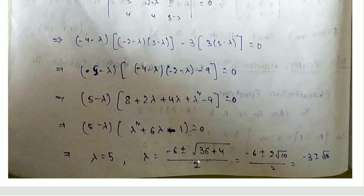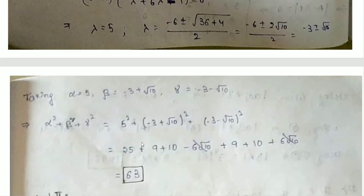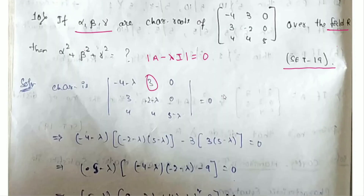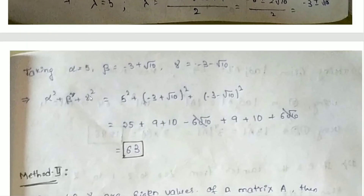The eigenvalues are: λ₁ = 5, λ₂ = −3 + √10, λ₃ = −3 − √10. So α = 5, β = −3 + √10, γ = −3 − √10. We compute α² + β² + γ² = 25 + (−3+√10)² + (−3−√10)² = 25 + 19 + 19 = 63. The final answer is 63.